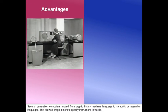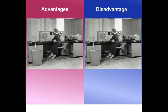Advantages: second-generation computers moved from cryptic binary machine language to symbolic or assembly languages, which allowed programmers to specify instructions in words. Disadvantage: high cost and limited to special-purpose tasks.